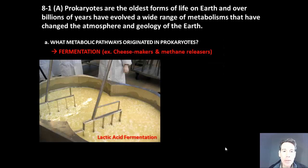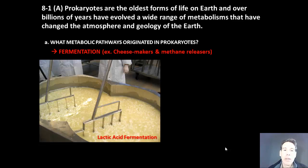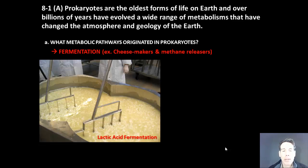Here we're looking at an example of those prokaryotes, such as these bacteria, that are using the sugars and proteins in milk to generate lactic acid. And that lactic acid is creating an acidic environment, causing the milk to curdle, which helps to create cheese.